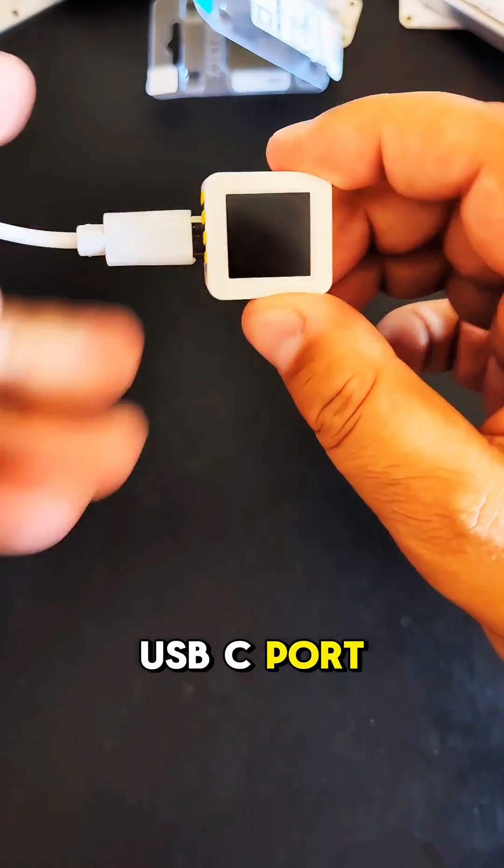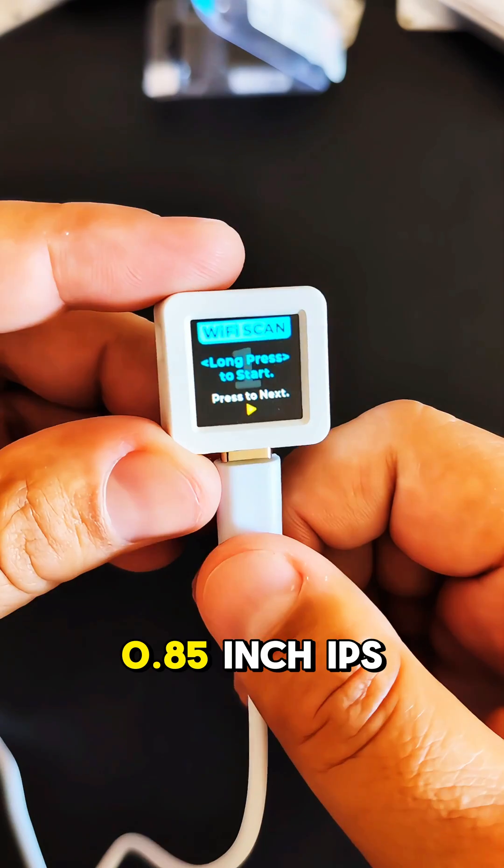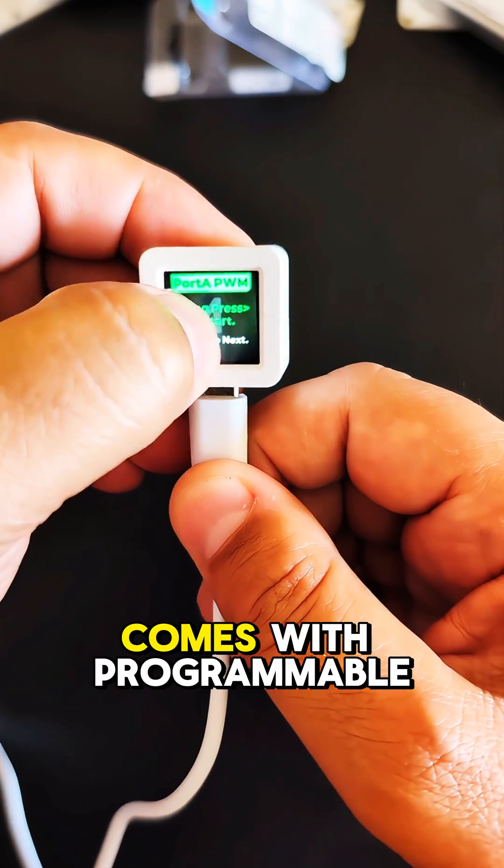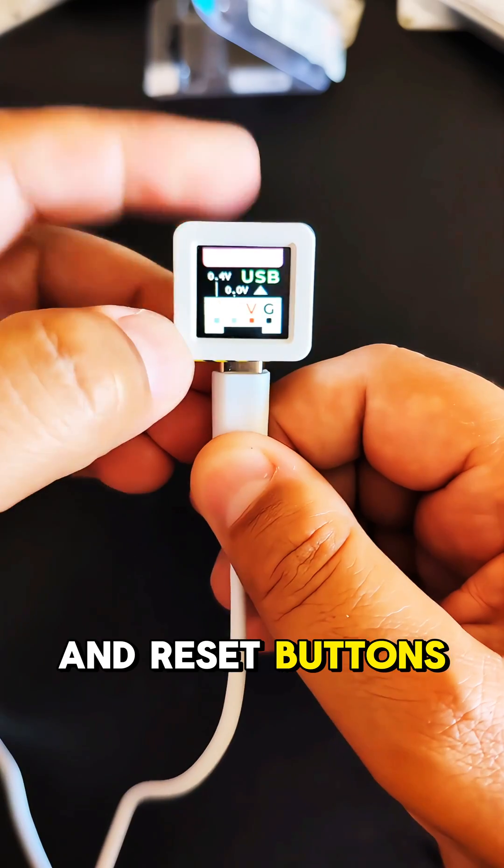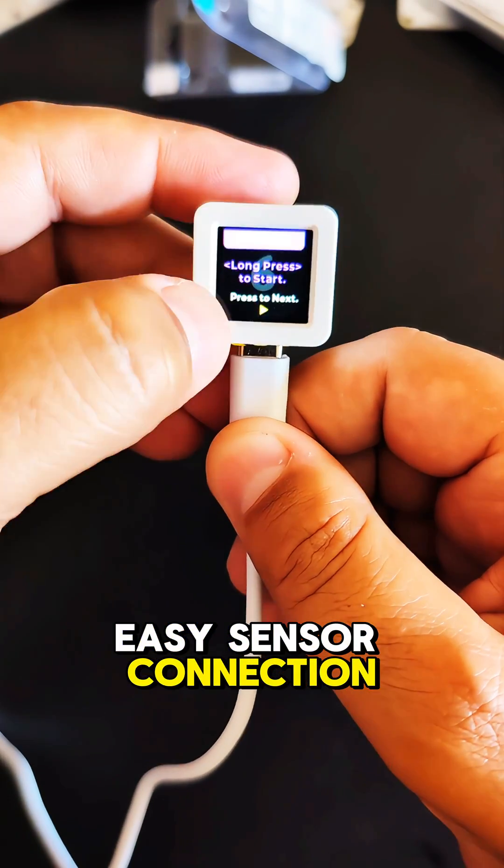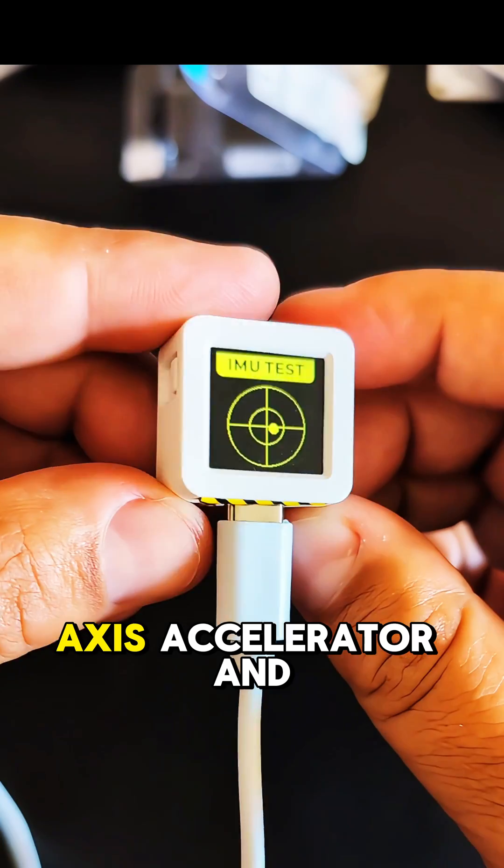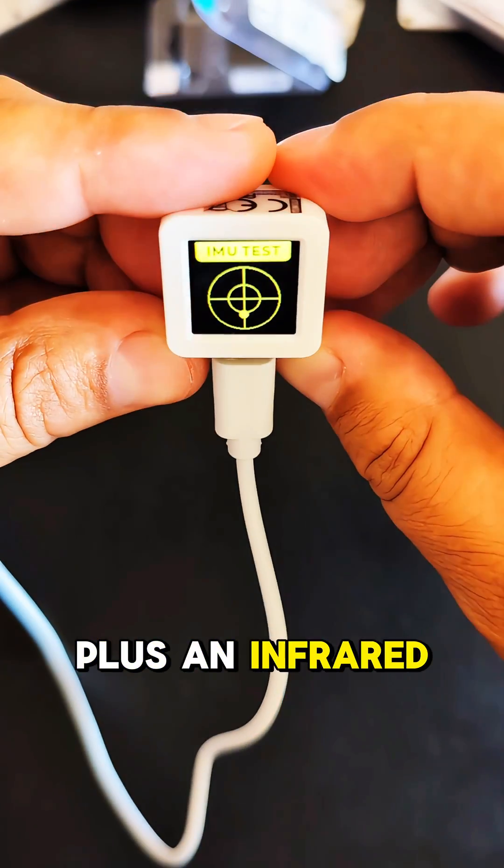It has a USB-C port and a 0.85-inch LCD IPS display with a physical button. Comes with programmable and reset buttons, a Grove port for easy sensor connection, and Wi-Fi connectivity. Also includes a 6-axis accelerometer and gyroscope plus an infrared LED.